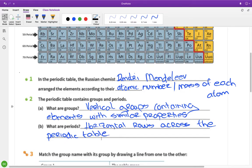Okay, so Dmitry Mendeleev, the scientist, he organized or arranged the elements according to their atomic number. The groups are vertical, so they go down the periodic table, and I sort of feel like you have to say containing elements with similar properties. According to the book you don't, but I would say in any exam you probably would have to. Periods are horizontal rows across the periodic table.